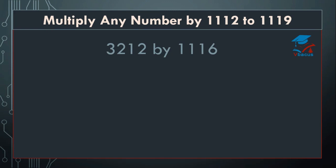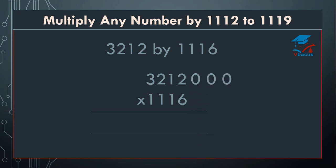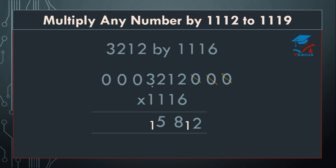Now this is your last sum: multiply 3212 by 1116. Again, insert 3 zeros on the right hand side and 3 zeros on the left hand side. Start multiplying by 6 only and keep on adding 4 digits at a time. So, 6 twos are 12 plus 0 plus 0 plus 0 equals 12. Write 2, 1 will be carried over. Cut 1. 6 ones are 6 plus 2 equals 8, plus 0 plus 0 equals 8. Write 8. Cut the 0. 6 twos are 12 plus 1 equals 13, plus 2 equals 15. Write 5, 1 will be carried over. Cut the 0. 6 threes are 18, plus 2 equals 20, plus 1 equals 21, plus 2 equals 23. Write 3, 2 will be carried over.